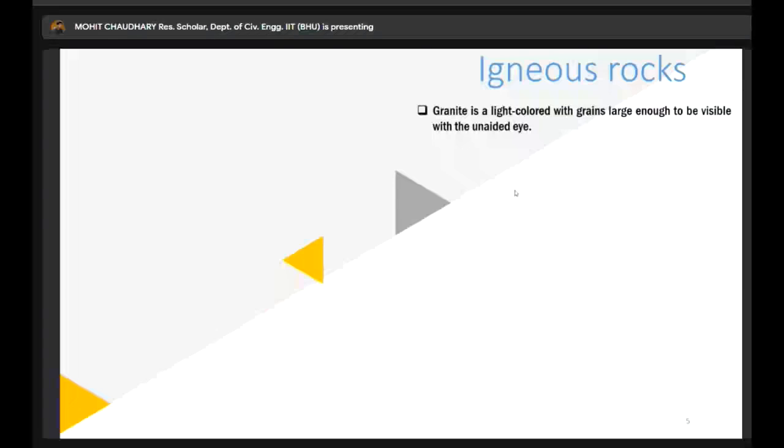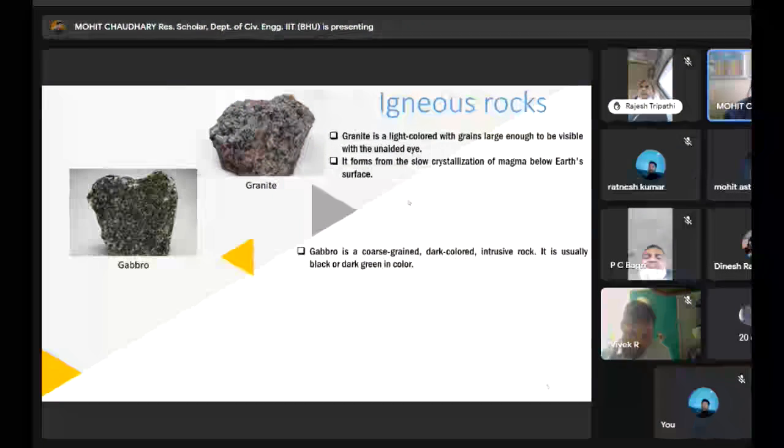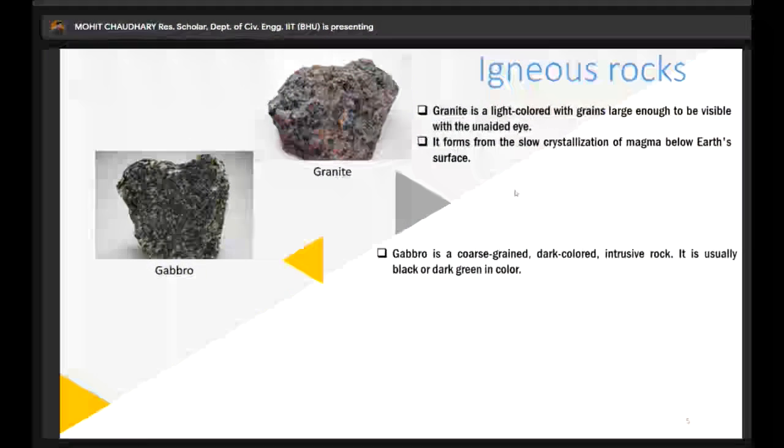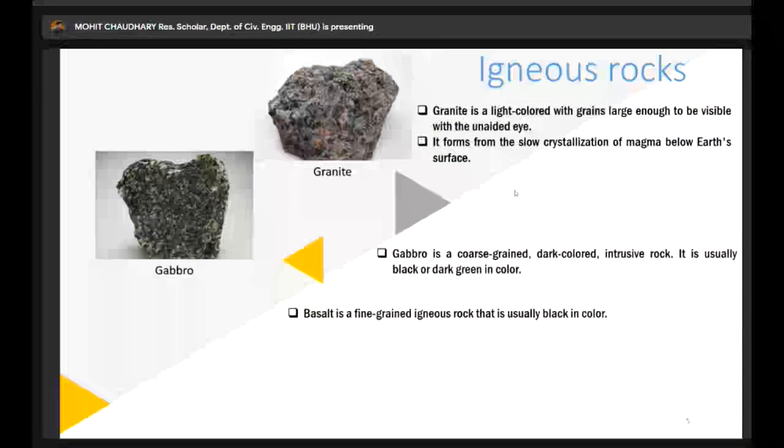The acidic rock like granite, as we can see here, is light colored but its grain size is very large, visible with the naked eye. It forms from slow crystallization of magma. The other two basic rocks - gabbro is coarse grained but dark colored and intrusive, usually black or dark green. Another common rock is basalt, which is fine grained.